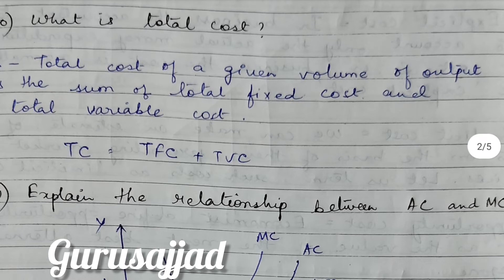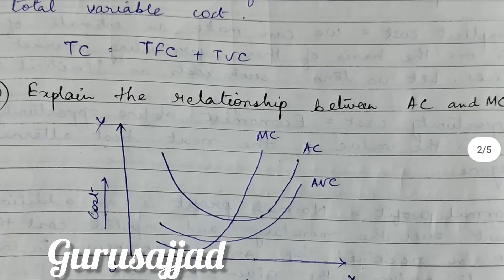Next question: What is total cost? The total cost of a given volume of output is the sum of total fixed cost and total variable cost. Total cost is the summation of total fixed cost and total variable cost — when we add these together, we get the total cost.